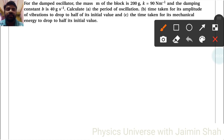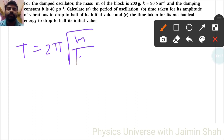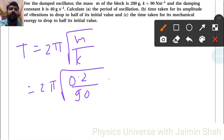The question is for the damped oscillator: the mass m of the block is 200 grams, k is equal to 90 Newton meter inverse, and the damping constant b is 40 gram per second. Calculate the period of oscillation. The formula is T equals 2 pi under root of m upon k. So 2 pi under root of mass 0.2 and k is 90.